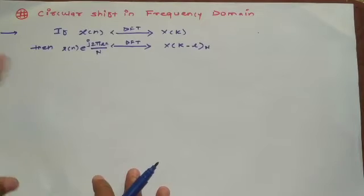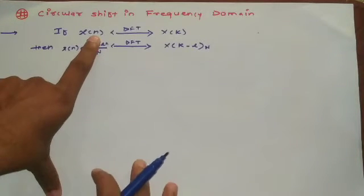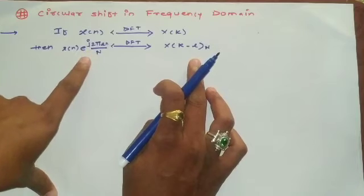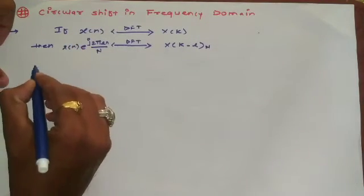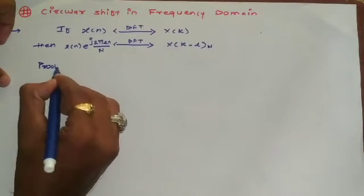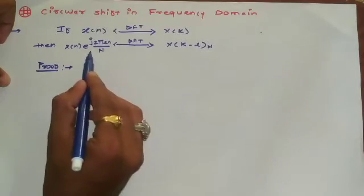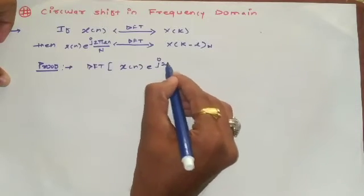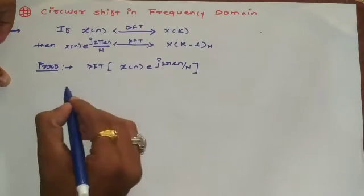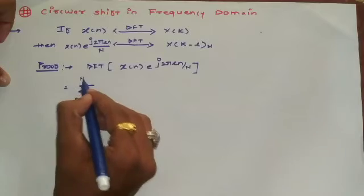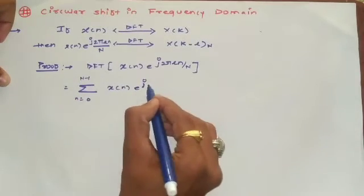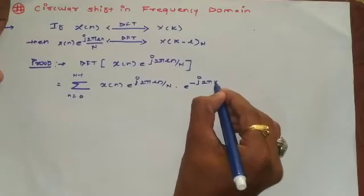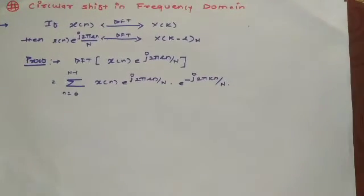Now comparing with the time domain: when the input sequence is shifted by L units, we get the term e raised to minus j, but since we are shifting in the frequency domain, we get the term e raised to plus j. Now let us prove this. To prove this we find the DFT of the sequence x of n multiplied by that exponential term, which equals the summation from 0 to N minus 1 of x of n multiplied by e raised to minus j 2 pi k n divided by N — this is the standard formula.